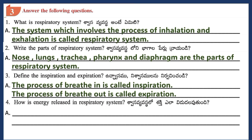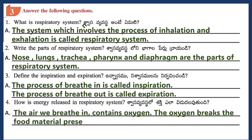Question 4: How is energy released in the respiratory system? Answer: The air we breathe in contains oxygen. The oxygen breaks down the food material present in the cells and releases energy.